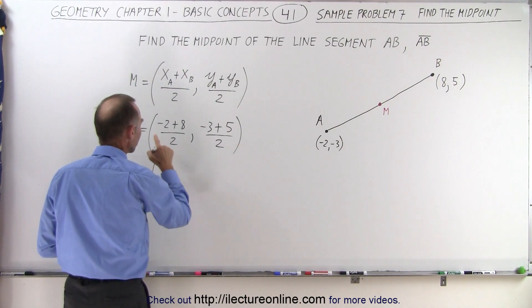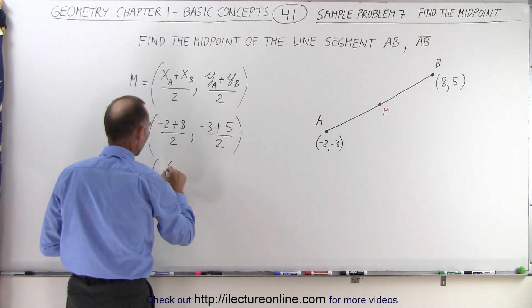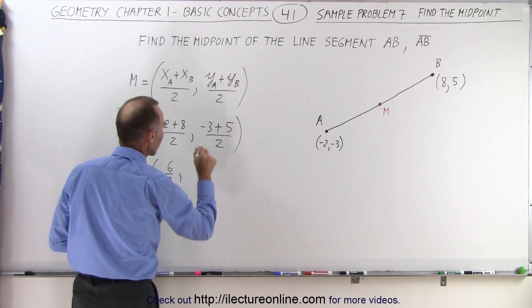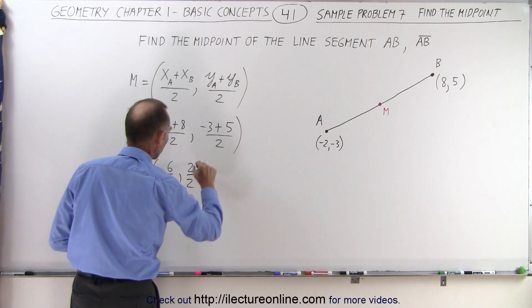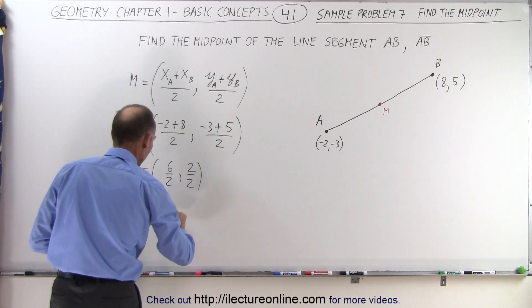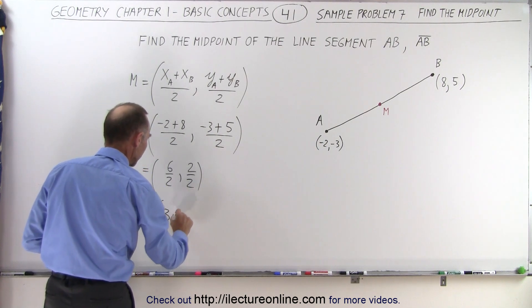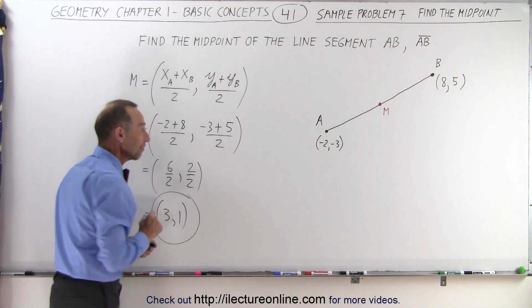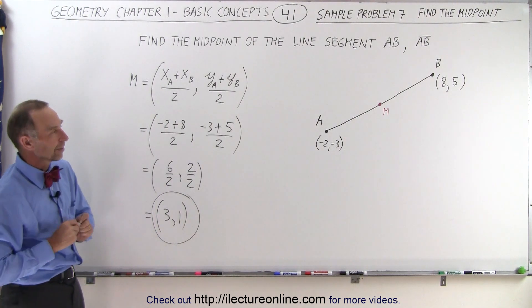And so this is equal to negative 2 plus 8, that's 6 over 2, and negative 3 plus 5, which is 2 over 2, which means the midpoint can be found at the x coordinate 3 and the y coordinate 1. And that's how you find the midpoint of a line segment.